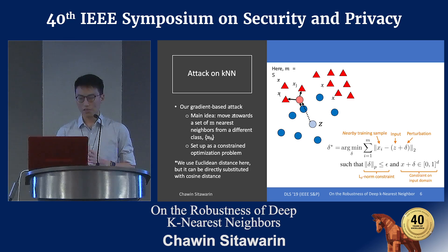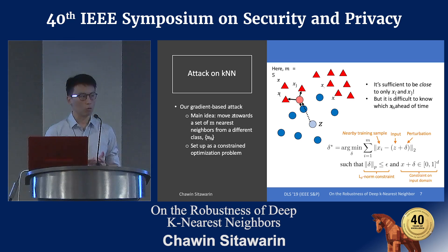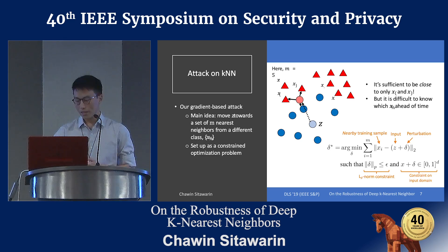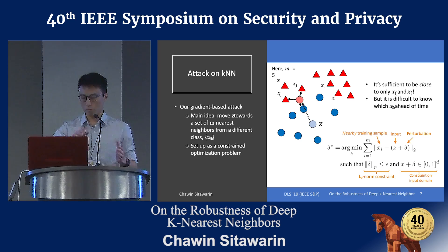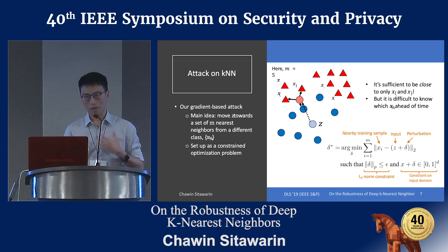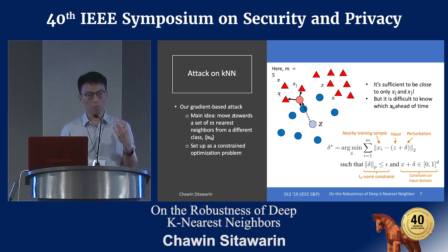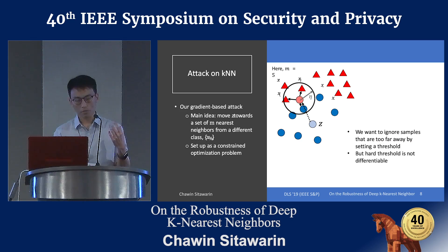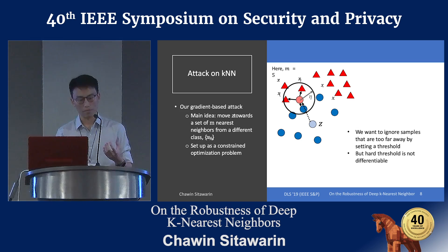This is actually pretty close to what we want, but still not exactly. We pick some M number of samples, but what this objective function does is it might try to move our input close to all of them, or maybe really close to some of them but really far from others. But really what we want is to be just close enough to some of them.